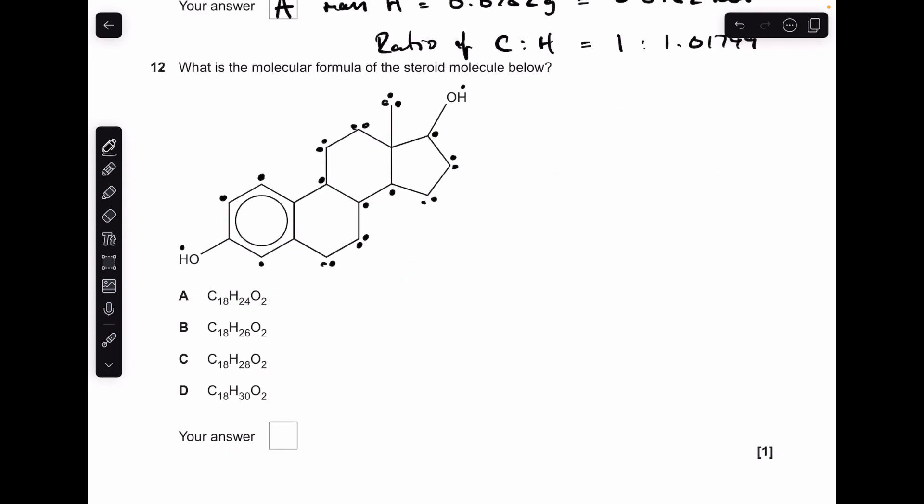Moving on to number 12, it's all down to the number of hydrogens, because they've all got 18 carbons and 2 oxygens. The dots represent the hydrogens, and there are 24 there, so A was the answer.